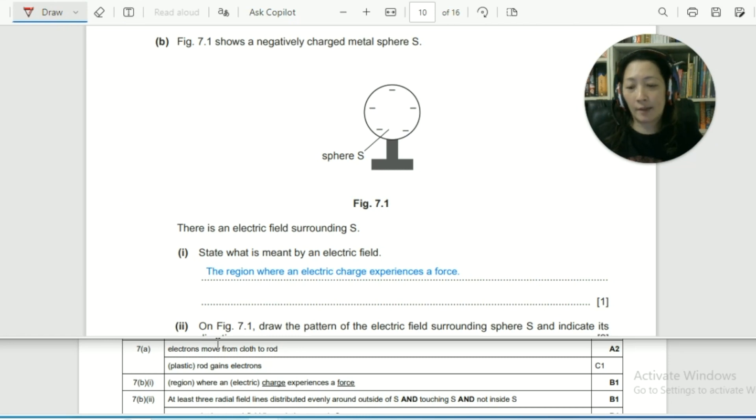If we check the mark scheme, they've underlined two words here. And these two words must be present in your definition to score the one mark. So you must have the word charge as well as force. So this is where we'll get our one mark.